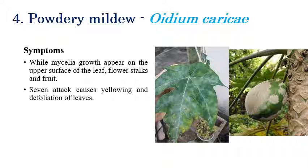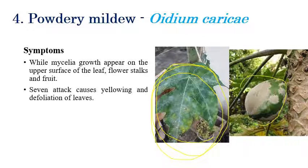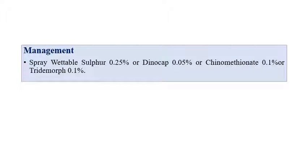The next disease is powdery mildew, caused by Erysiphe caricae. White color powdery growth appears on the upper surface of leaves and on fruits. Symptoms can be seen on both upper and lower surfaces of leaves. White color mycelial growth covers the fruit. In later stages, yellowing of leaves can be seen, and ultimately defoliation occurs. Management: spray wettable sulfur at 0.25%, or Dinocap at 0.05%, or Quinomethionate at 0.1%, or Triadimefon at 0.1%.